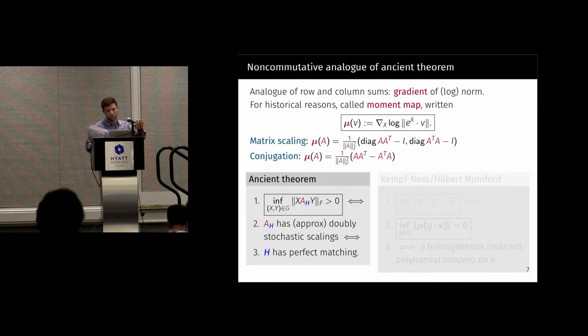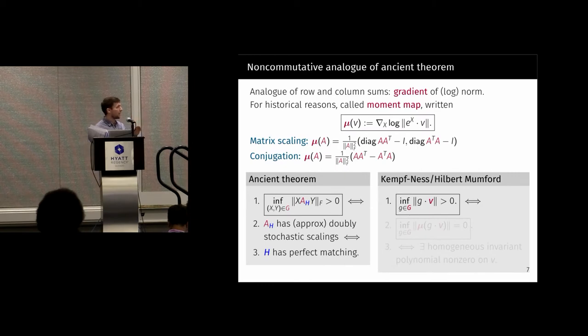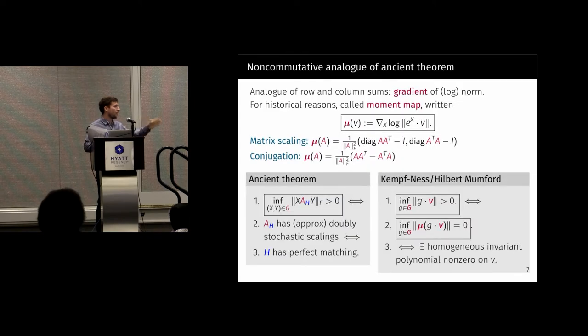We had our ancient theorem for matchings. The analog of that in our more general setting is going to be the combination of the Kempfness and Hilbert Mumford theorem, which tells us that the infimum over the norm is greater than zero if and only if you can set this gradient, the moment map, approximately equal to zero. And then if and only if, well, the thing that corresponds to a perfect matching is actually much different sounding, but we don't really need to get into it. But it has to do with whether homogeneous invariant polynomials vanish on the point B. These homogeneous invariants are the analogs of perfect matchings. And what this theorem tells us is that we can get at this third bullet point through optimization, not having to do algebra, which is great.